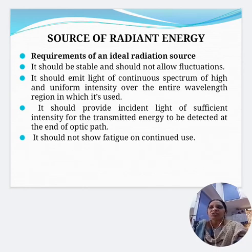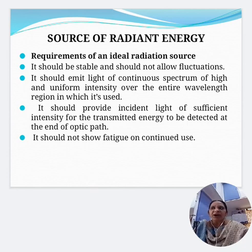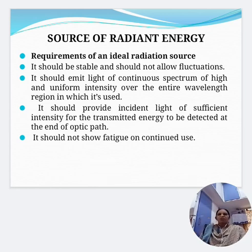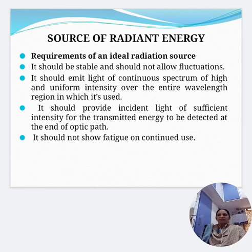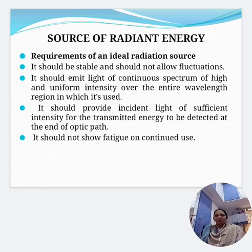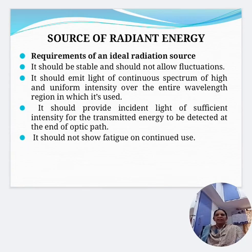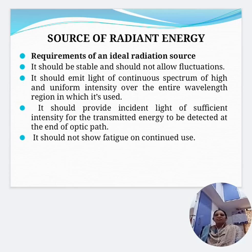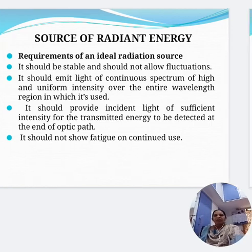The source of radiant energy: the basic requirements of an ideal radiation source are that it should be stable and not allow fluctuations; it should emit light of continuous spectrum of high and uniform intensity over the entire wavelength region in which it is used; it should provide incident light of sufficient intensity for the transmitted energy to be detected at the end of the optical path; and it should not show fatigue on continued use.